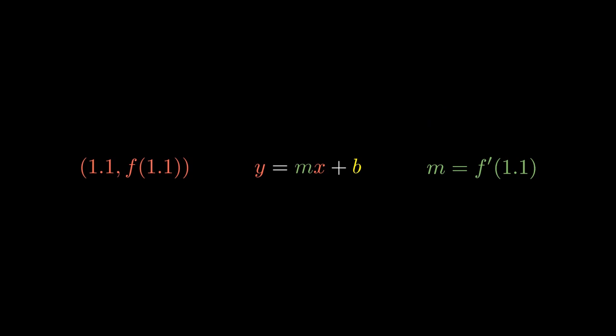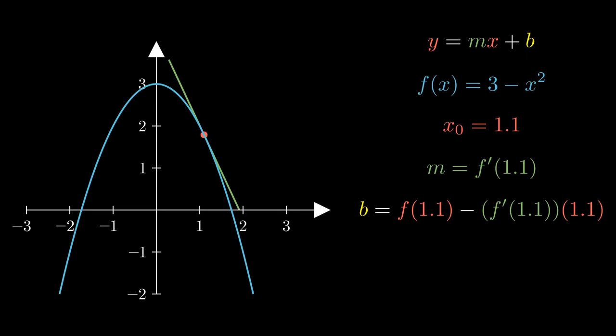Now, we have the slope of the line, f prime of 1.1, and a point that lies on it. Again, 1.1 comma f of 1.1. So we should have everything we need to calculate b, the y-intercept of the tangent line, which I'll show here by simple substitution. And with that, we've got our b, which gives us everything we need to model this tangent line. y equals the slope times x, plus this large yellow constant, b.